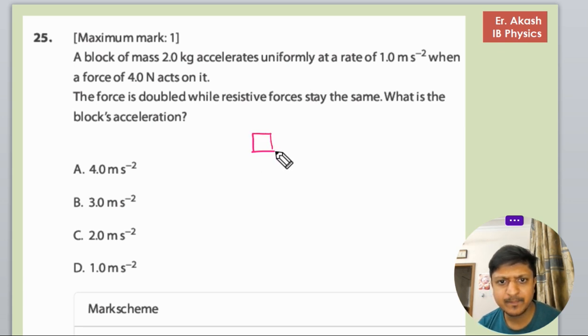The force is 4 newtons acting on the body, the mass is 2 kg, and the acceleration is 1 meter per second squared. The force is doubled while the resistive force stays the same.